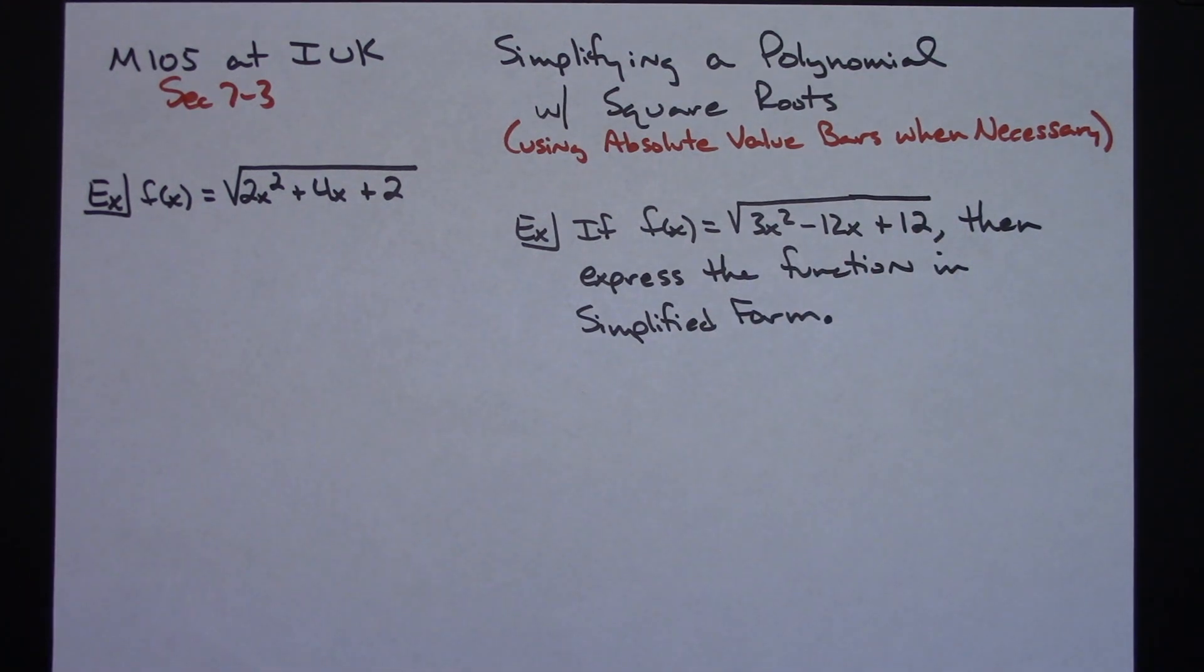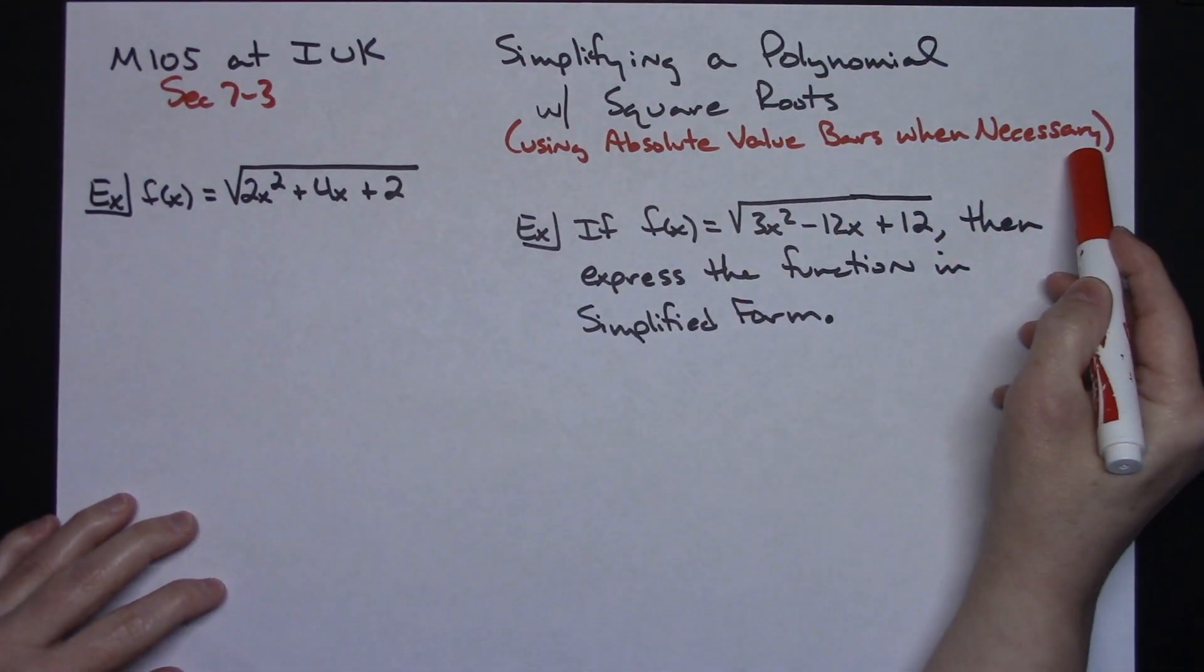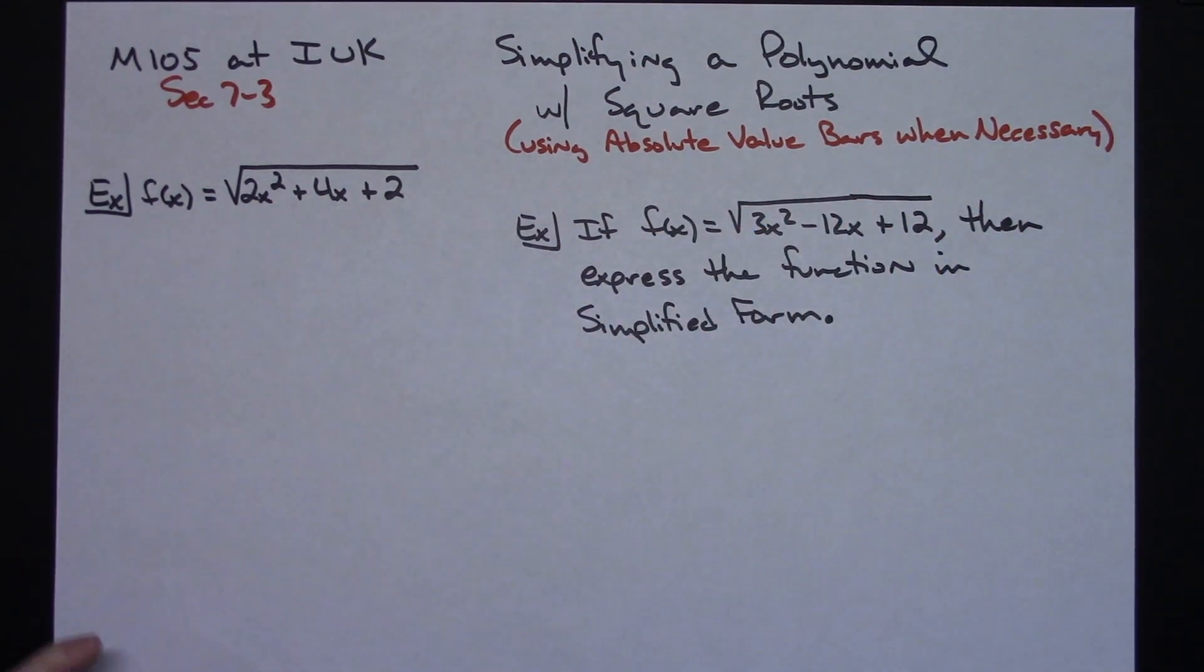In these particular given examples I am going to be using absolute value bars when necessary because both of these are square roots. We are not going to be assuming that any of the variables are positive. We're going to go ahead and use those absolute value bars.